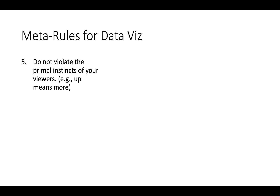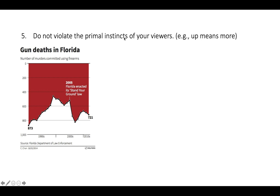The fifth rule is: don't violate the primal instincts of your viewers — meaning 'up means more.' Every child knows this not from reading maps, but because when they pile up blocks, the more blocks they stack, the higher it goes. So when you see a graph where the y-axis is inverted and down means more, it's very shocking and jarring. Don't make bigger mean less, or more intense color mean less.